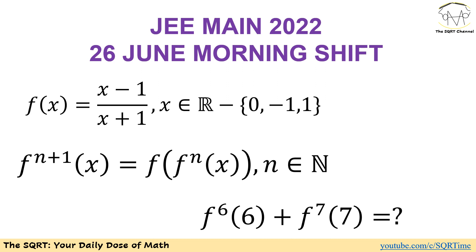Hello everyone, welcome to the SQRT channel. In this video we are going to talk about another problem from JEE Main from 2022. Here in this problem we have f(x) defined as (x minus 1) over (x plus 1), where x is not going to be 0, negative 1, or 1 — x can be any real number except for those.